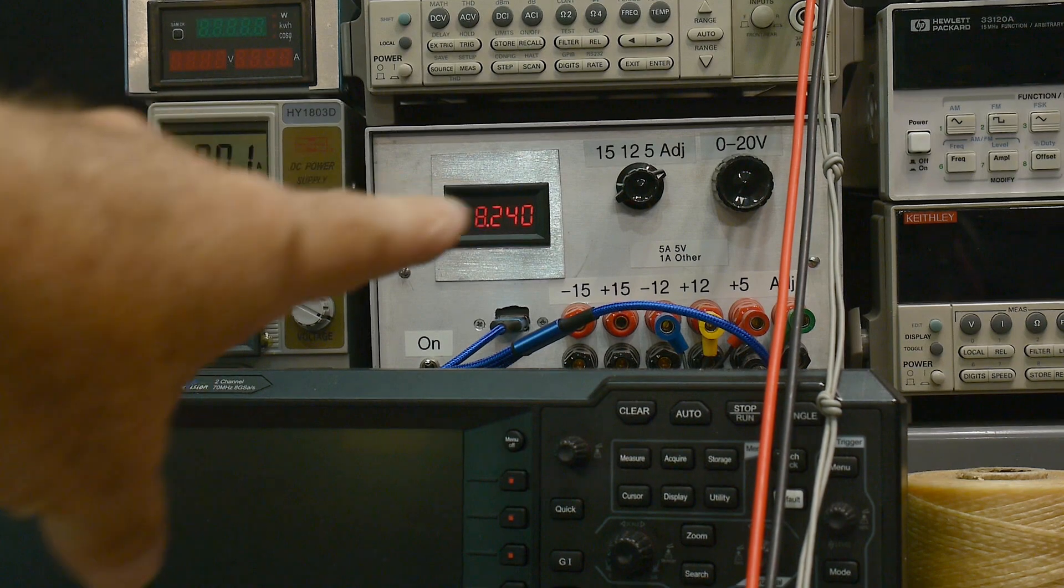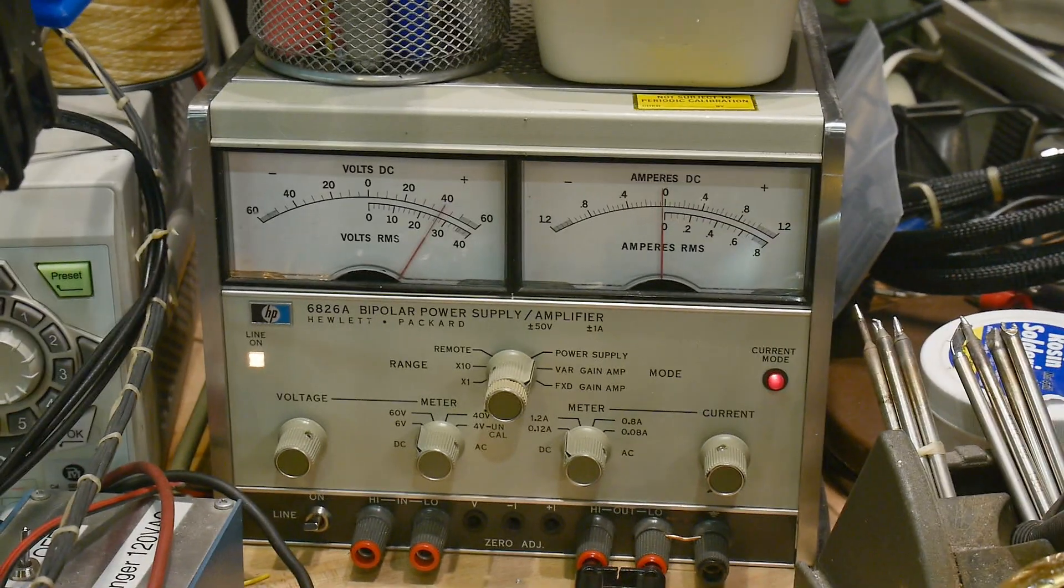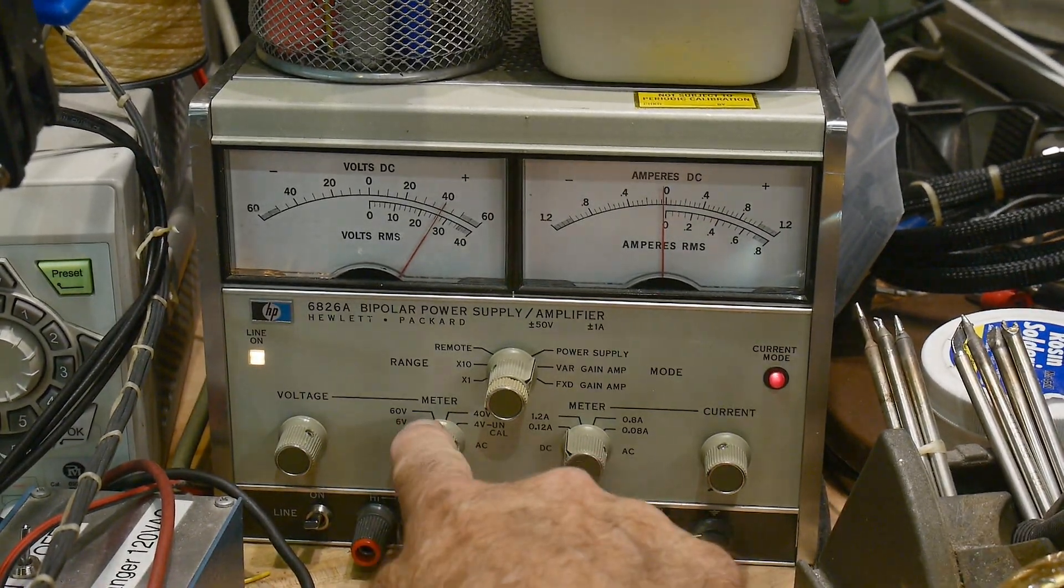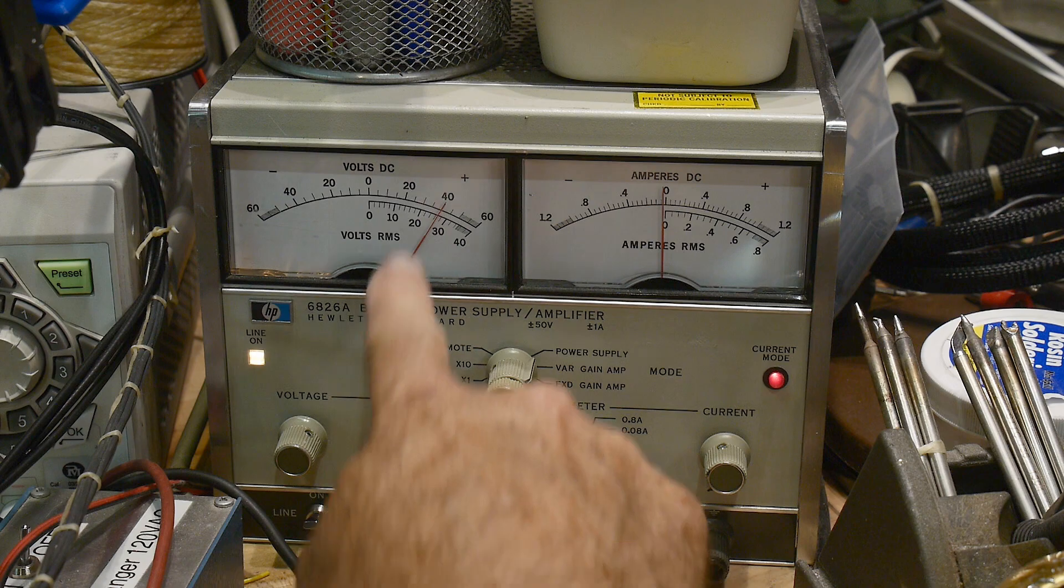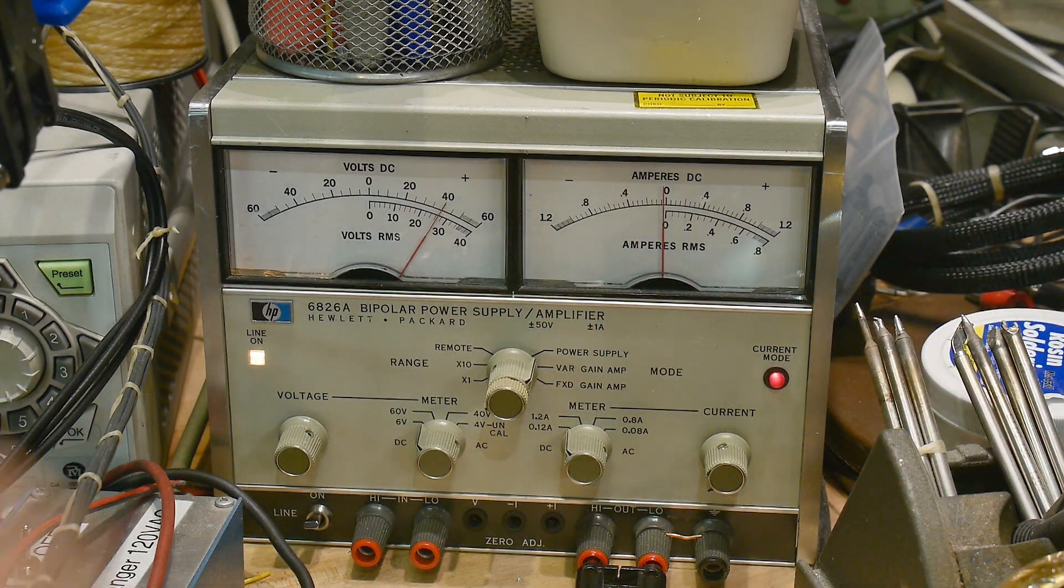And so right now, this is set to four volts. And down here, I have this set to ten volt, I mean a six volt full scale, so it's measuring four volts and there's no current because there's nothing going in, right?